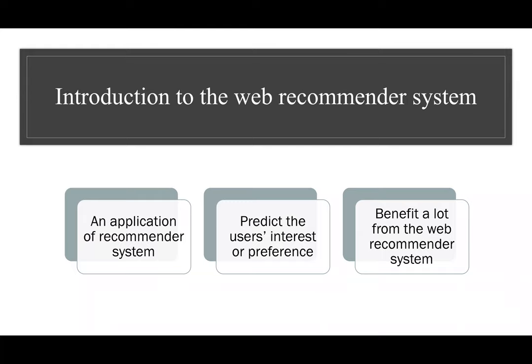Recommender systems need existing connections to predict future connections. For example, an e-commerce platform will predict the items you may buy in the future and recommend them when you are browsing their website, based on what you have bought from their platform. Nowadays, with the exponential growth of data and internet information technology, people are no longer living in the age of lack of information. The occurrence of recommender systems may unconsciously reduce the time users spend searching for things they are looking for.